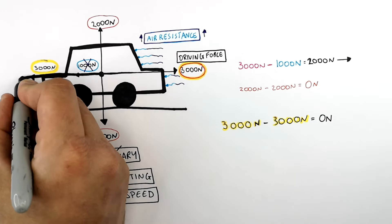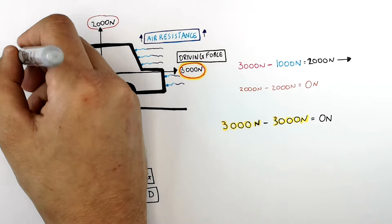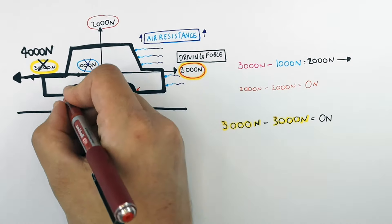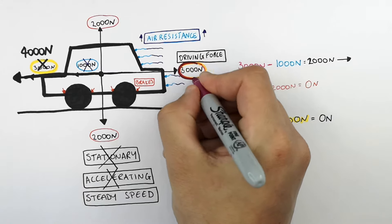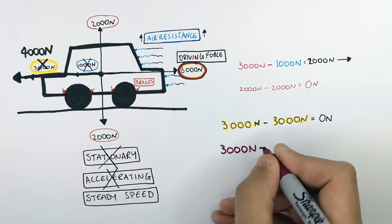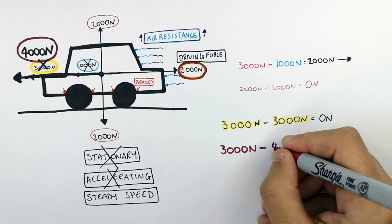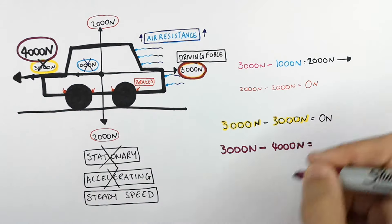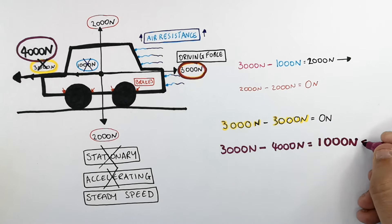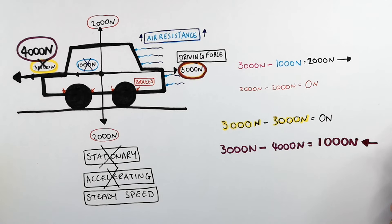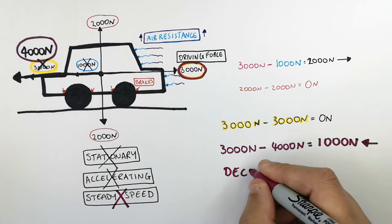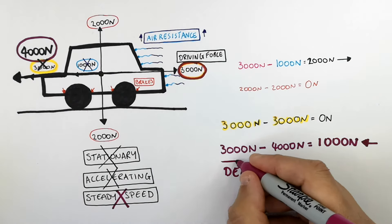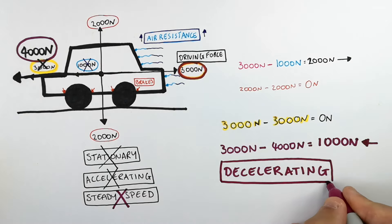The frictional forces acting in opposition to the driving force increase from 3,000 newtons to 4,000 newtons, because a braking force has been applied to the wheels by the brakes. To calculate the new resultant force, you do 3,000 newtons of the driving force minus 4,000 newtons of the oppositional frictional force, which gives a resultant force of 1,000 newtons backwards — or minus 1,000 newtons, because it's a vector quantity. Because there is now a resultant force acting on the car, the car is no longer moving at a steady speed; the car is now decelerating due to this negative resultant force.